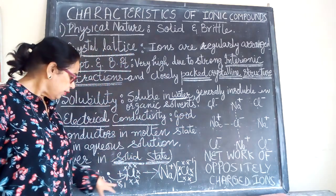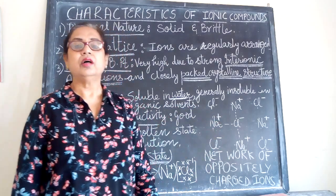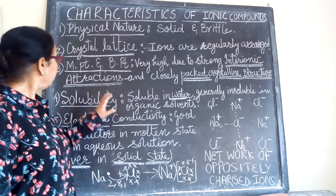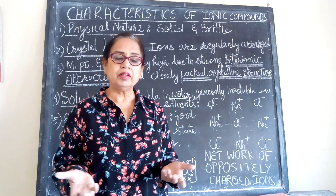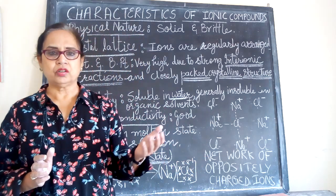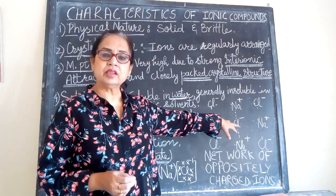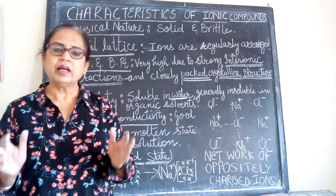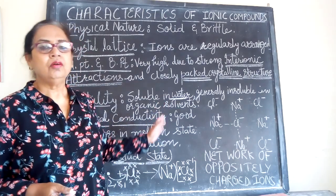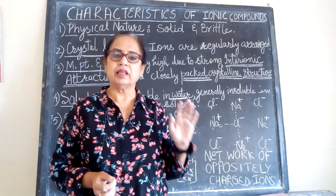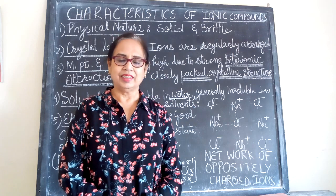This is the electron dot structure and this is the crystalline structure of an ionic compound. As for why they are soluble in water but insoluble in organic solvents — it is due to the polar nature of water. The polar nature causes the oppositely charged ions to be separated. That concept in detail is not in your syllabus, so we will not go further into it. That covers all the characteristics of ionic or electrovalent compounds. Thank you.